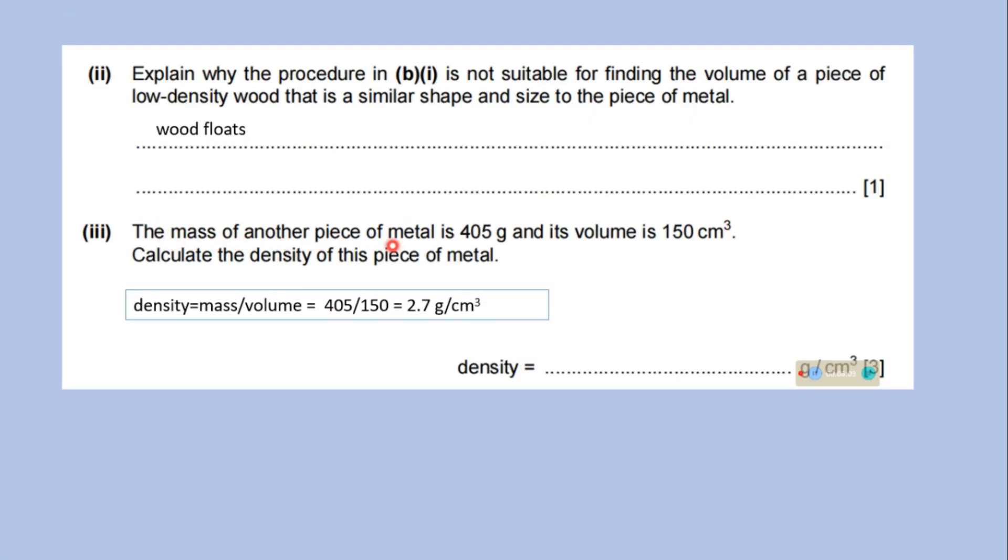The mass of another piece of metal is 405 gram and its volume is 150 centimeter cube. Calculate the density of this piece of metal. Density is equal to mass per unit volume. Mass is given in gram and volume in centimeter cube. Whole unit is given in CGS system. No need to convert any unit. And density will be 2.7 gram per centimeter cube.